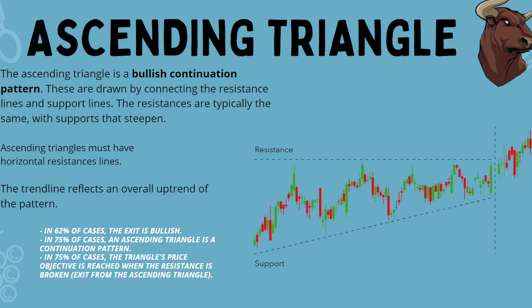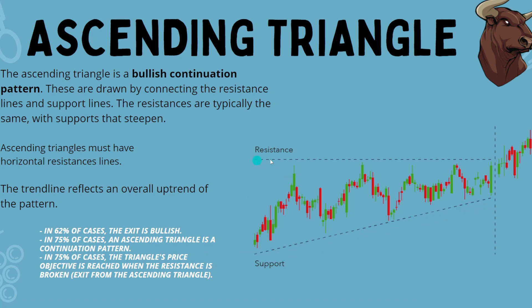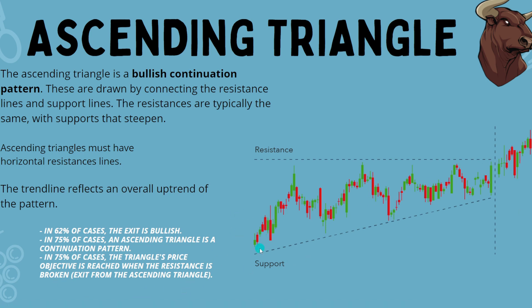The ascending triangle is a bullish continuation pattern drawn by connecting horizontal resistance lines and rising support lines. The resistance must be horizontal — it can't have big volatile wicks — while the support is coming up, showing bulls are winning. We're likely to see a break to the upside. In 62% of cases the exit is bullish, 75% of cases it's a continuation pattern, and 75% of cases the objective is reached by measuring the depth between support and resistance and adding it to the resistance line.